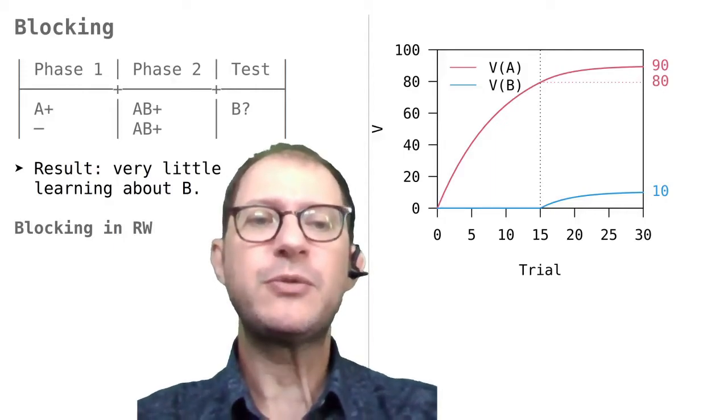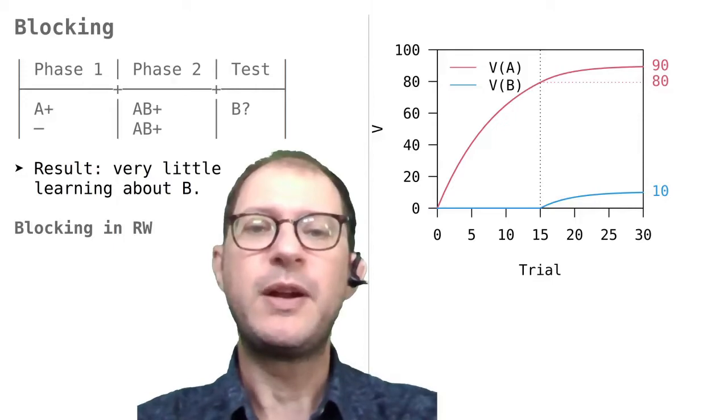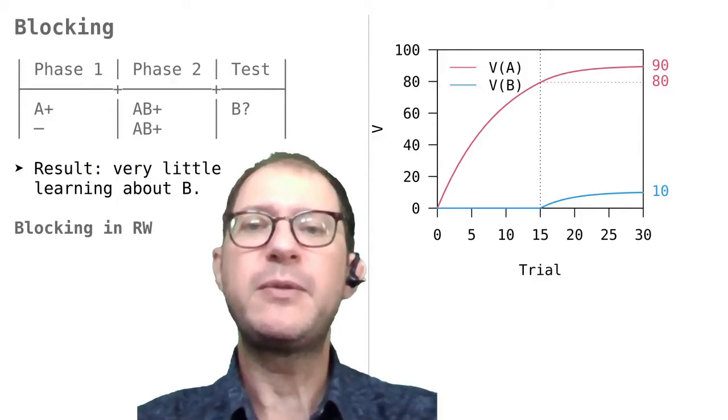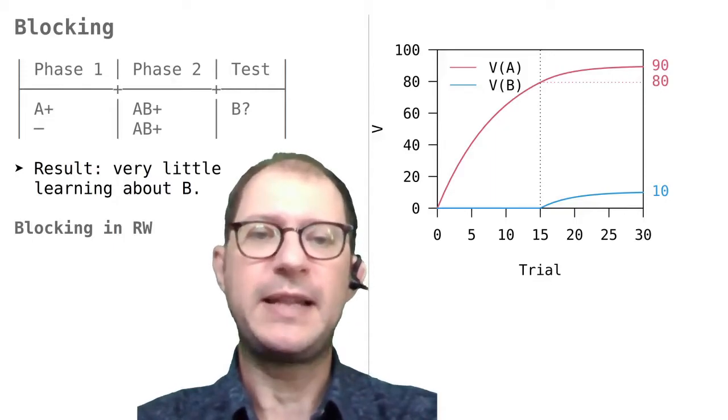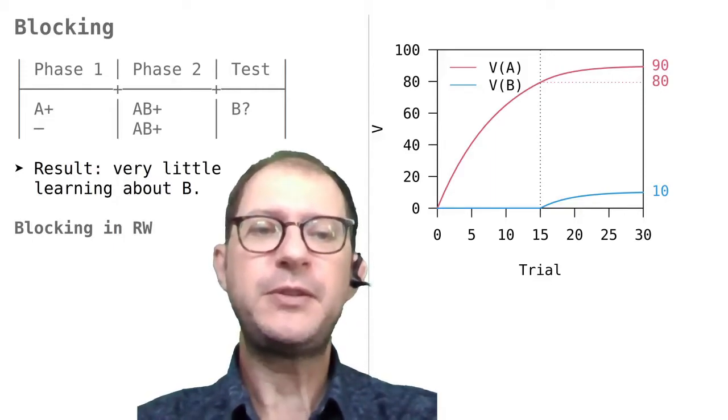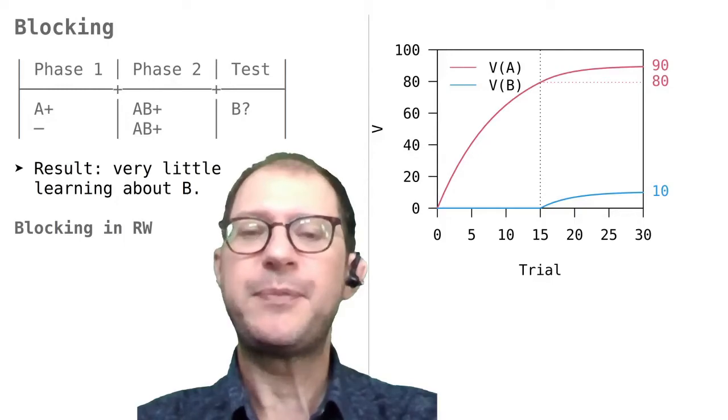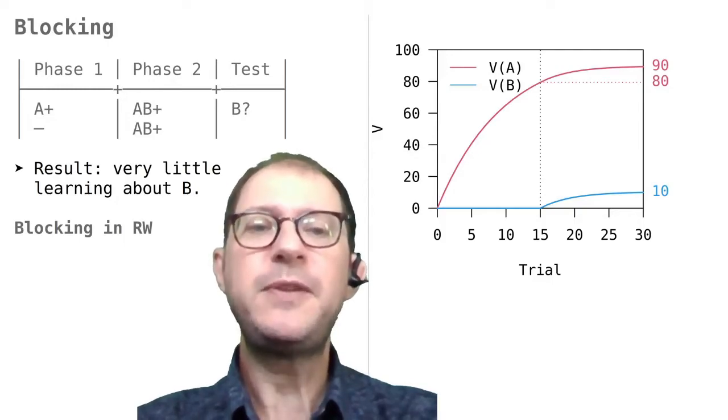This graph shows a situation where lambda is 100, as before, and both alpha A and alpha B equal 0.1. So in this case, no stimulus has a learning rate advantage. For the first 15 trials, there is only A, and no B. So we see that V(A) grows, but V(B) stays put at 0.